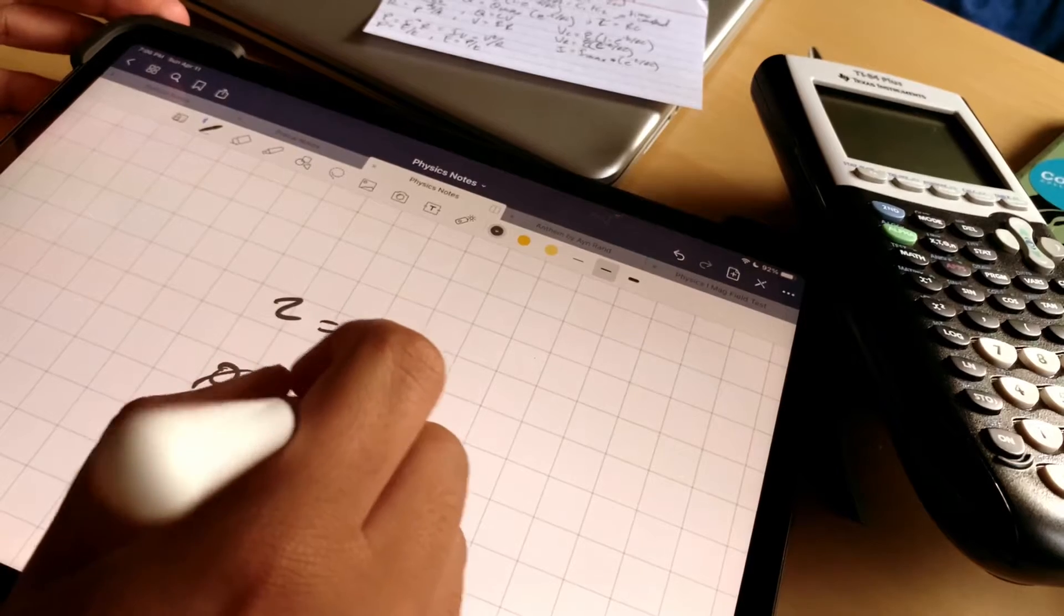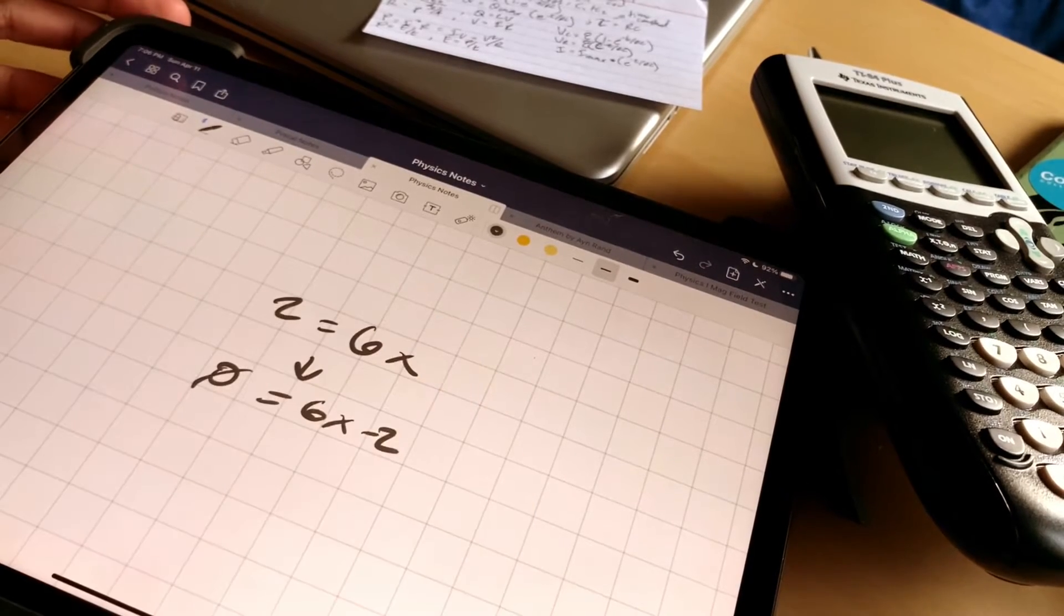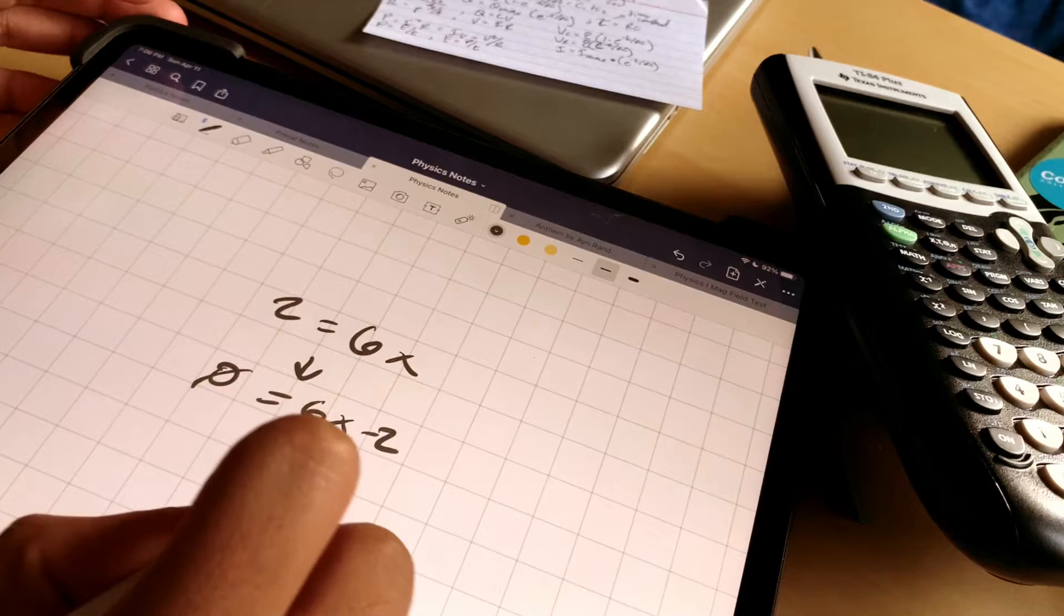Manipulate your equation so that everything is on one side of the equal sign, making the whole equation equal to zero.